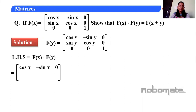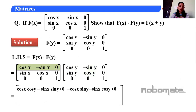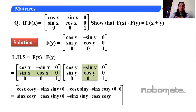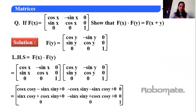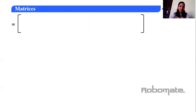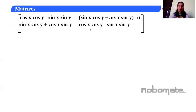Now we have to multiply f(x) into f(y). The order is 3×3, so the resultant matrix will also be of order 3×3. Multiplying row by column: first row into first column gives cos x·cos y − sin x·sin y. Taking minus sin common gives −(sin x·cos y + cos x·sin y). And sin x·cos y + cos x·sin y, and cos x·cos y − sin x·sin y for the diagonal.